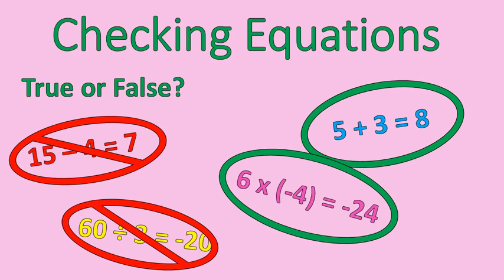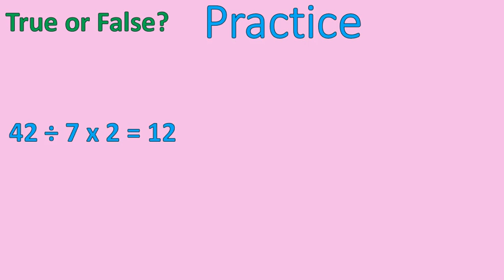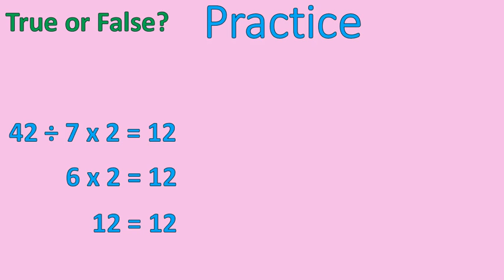Now equations are going to be a little more complicated than these ones, so let's do some practice with a couple of equations that have more than one step involved in them. Go ahead and pause the recording and solve that equation — is the left side of the equation equal to the right side? Welcome back. 42 divided by 7 is 6, and 6 times 2 is 12. That's a true equation. The left side of the equation is equal to the right side.